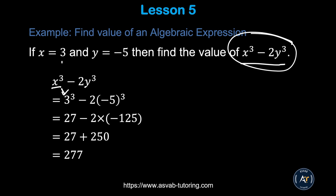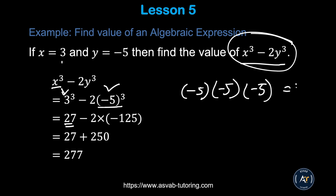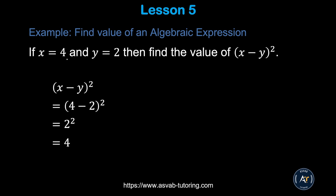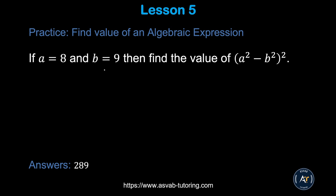Plug the values in: replace x with 3 and y with negative 5. So 3 cubed is 27. Then negative 5 cubed: negative 5 times negative 5 times negative 5 gives negative 125. Multiply by negative 2 to get 250. Adding 27 and 250 gives 277. For the next example, plug in the values: 4 minus 2 is 2, squared gives 4. There is another practice problem — pause the video and try it yourself.